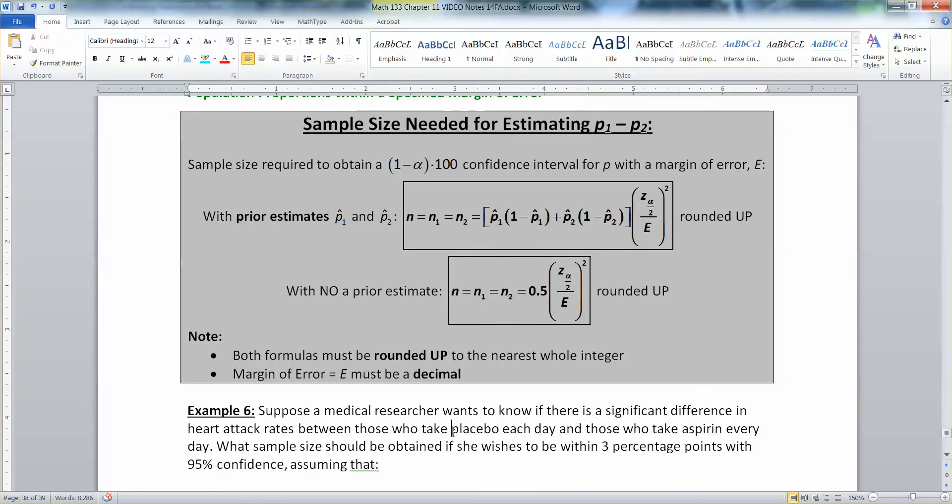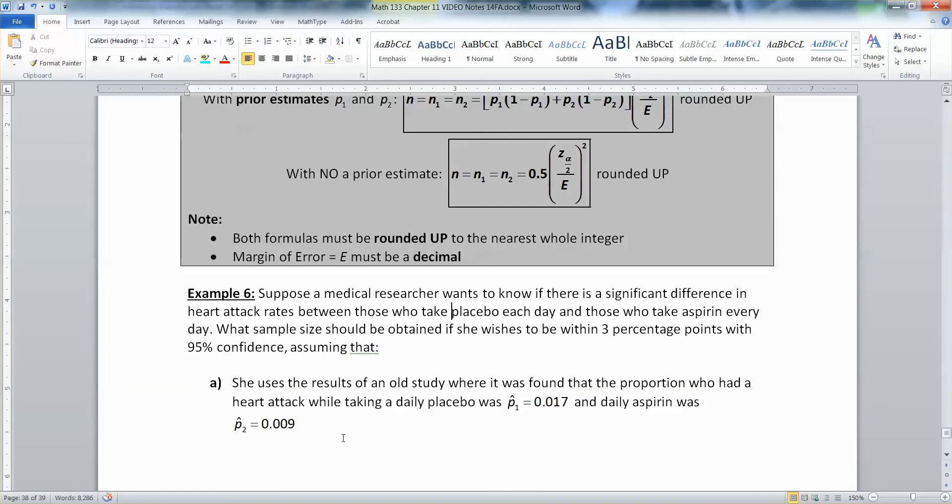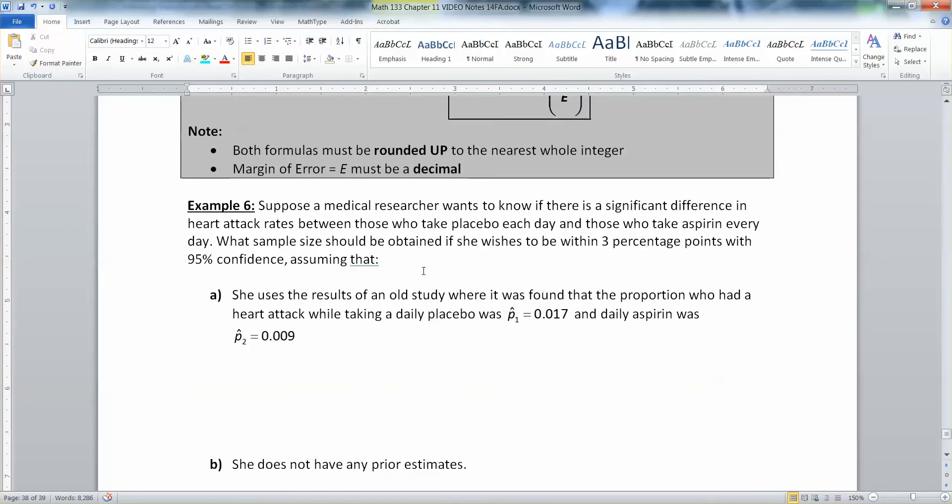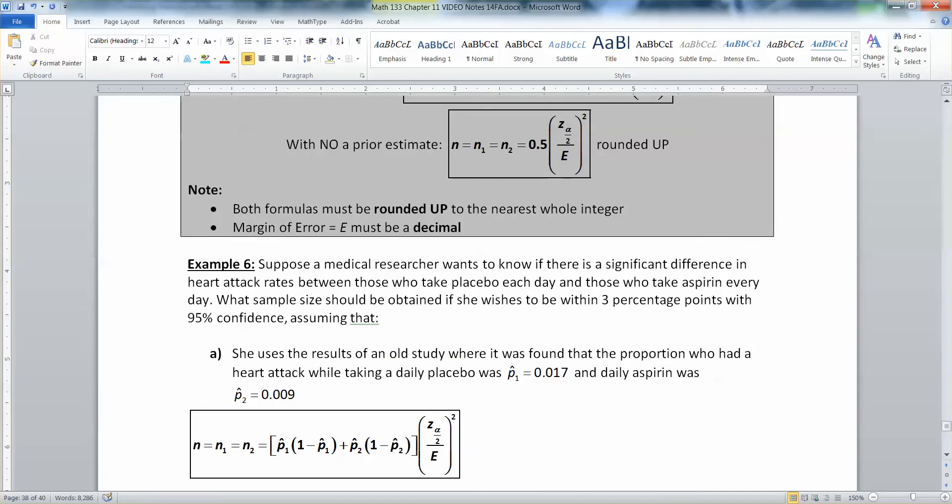Okay, suppose a medical researcher wants to know if there is a significant difference in heart attack rates between those who take placebo each day and those who take aspirin each day. So what sample size should be obtained if she wishes to be within three percentage points with 95% confidence. Assuming that she used the results of an old study where it was found that the proportion who had a heart attack while taking a daily placebo was p̂₁ = 0.017 and daily aspirin was p̂₂ = 0.009. Well there's your old information right there. You've got a prior estimate. So you are doing this formula up on the top.